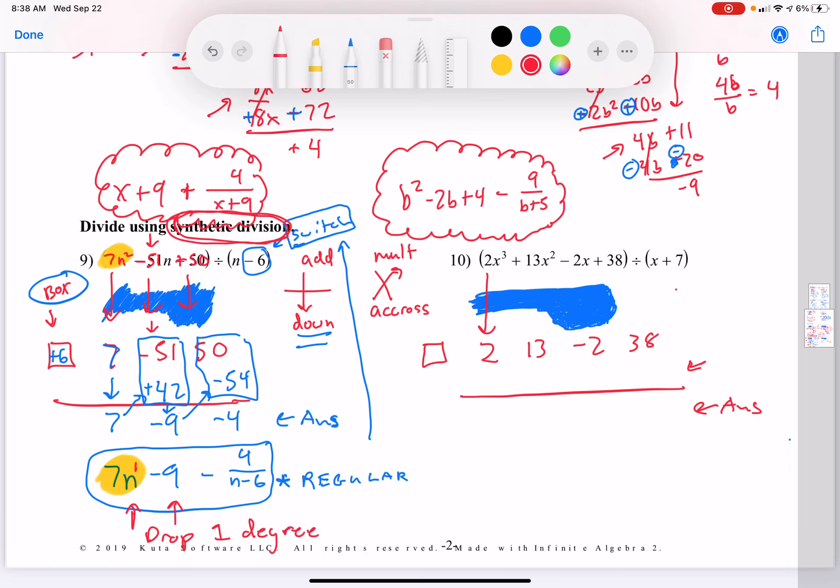So for example, the 7n squared drop to a 7n1. The 51n drop to a no n here. And then of course this is your remainder. Just always remember the last number is your remainder. That's why it goes on top here. We all should remember that, but just in case, I just wanted to be thorough.